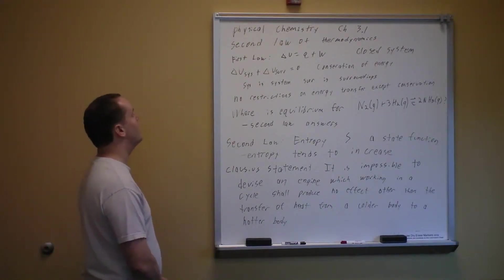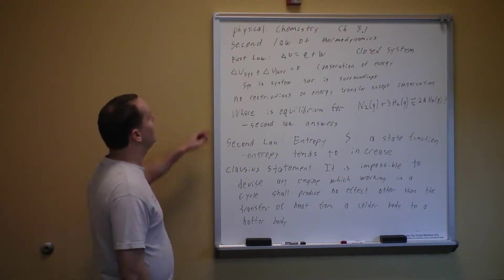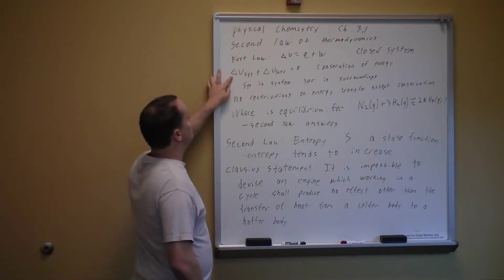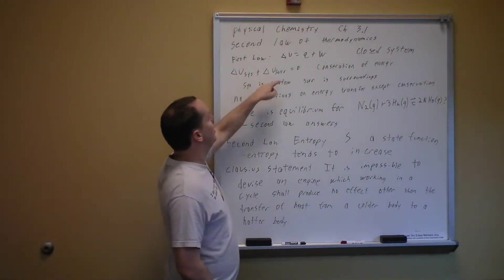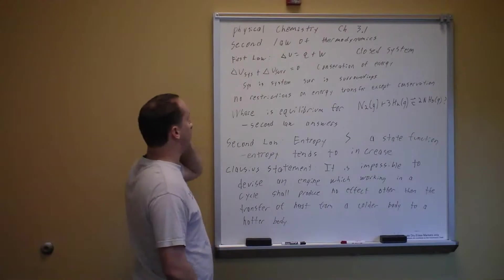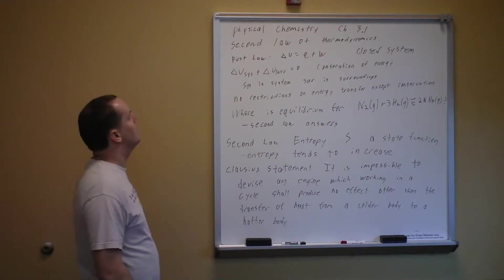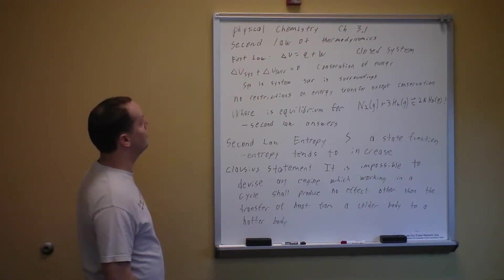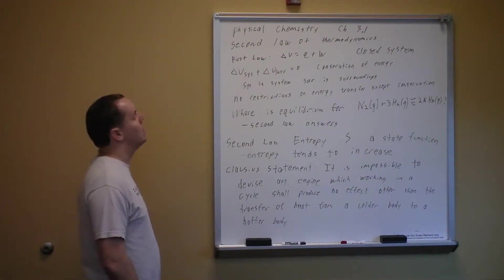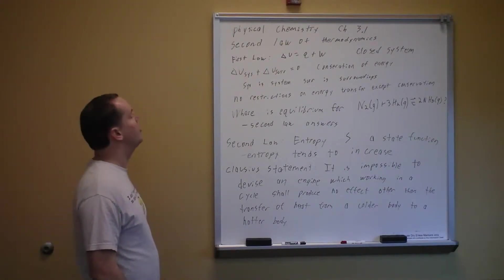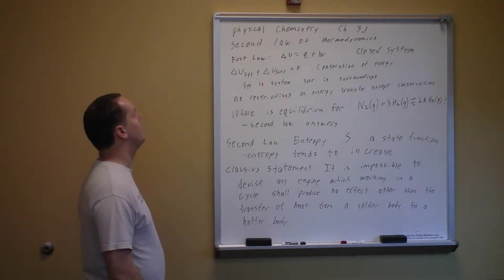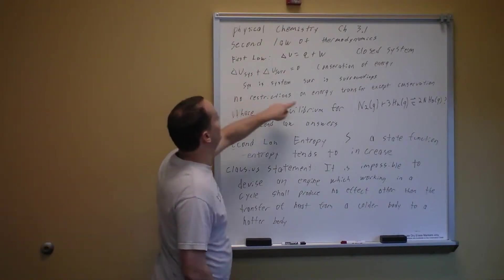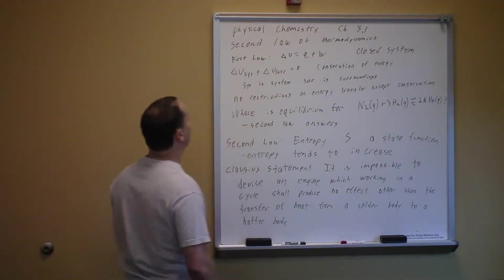The conservation of energy tells us that the change in energy of the system is equal to the change in energy of the surroundings, or put another way, the change in energy of the system plus the change in energy of the surroundings is equal to zero, because the overall change in energy of the universe is equal to zero. We're abbreviating SYS for system and SURR for surroundings.